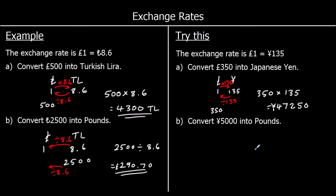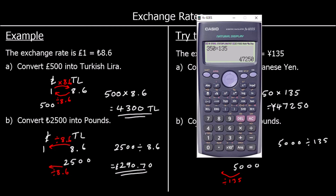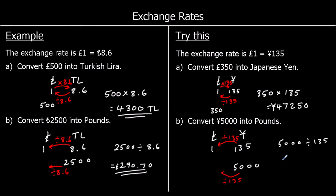Part B: convert 5,000 yen into pounds. The exchange rate is the same, and we're going from yen to pounds, so we're going to divide by 135. 5,000 divided by 135, to two decimal places, is 37.04. So that's 37 pounds and 4 pence.